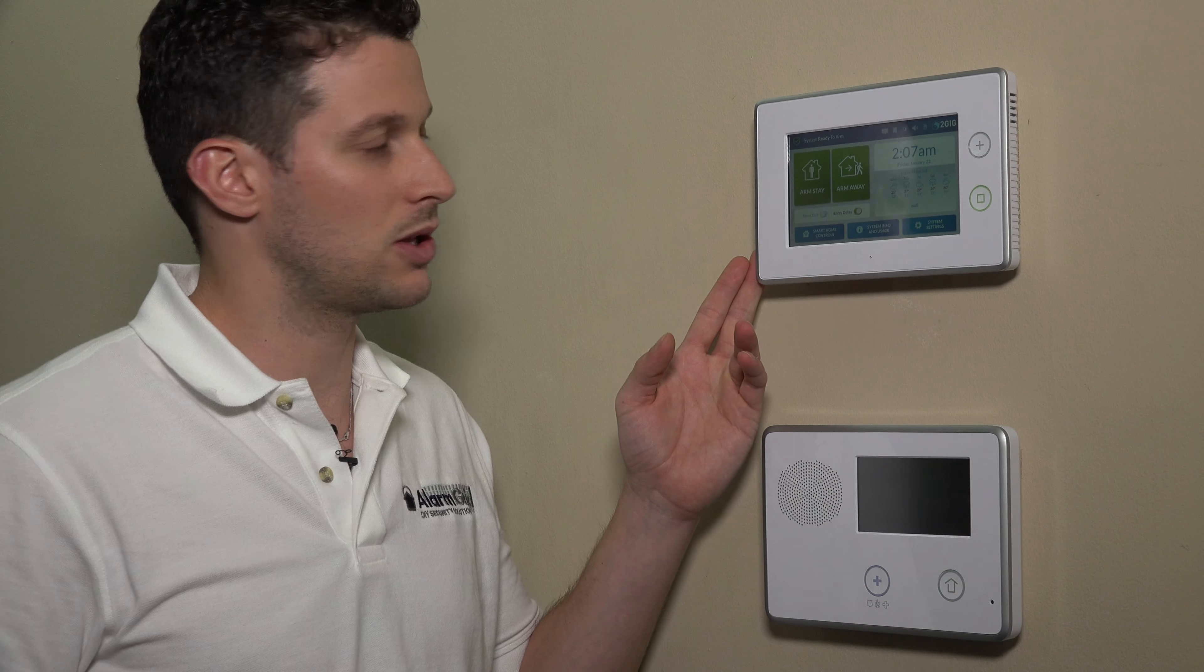This 3G radio will use the AT&T network. There is also a CDMA Verizon radio that we'll be showing you in another video. So if you do have better AT&T or Verizon coverage in your area, just use whichever radio that is. That's how you install the GC3GA-A-GC3.